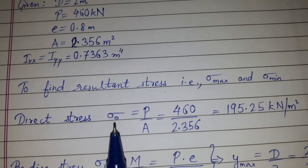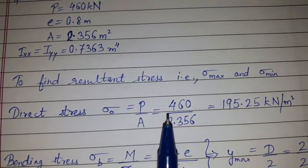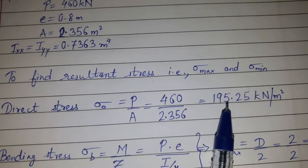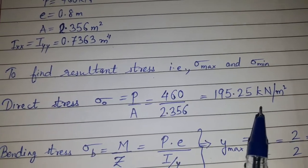So direct stress sigma naught is P upon A. We put the value of P and A and get the value of direct stress that is 195.25 kN/m².